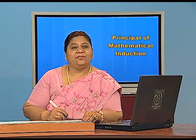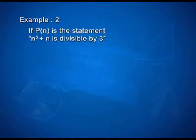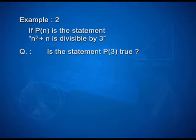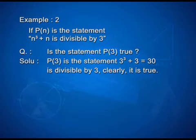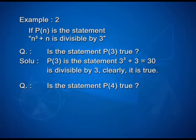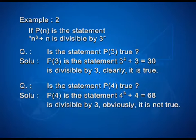Let us look at one more example. If P(n) is the statement: n³ + n is divisible by 3, let us check whether P(3) is true. P(3) gives 3³ + 3 = 27 + 3 = 30, which is divisible by 3 — clearly a true statement. Now let us check P(4): 4³ + 4 = 68. Is 68 divisible by 3? Obviously, it is not true.